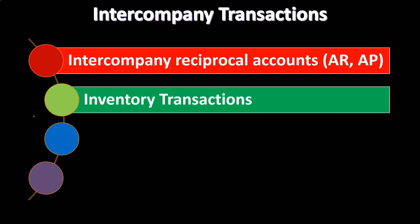Then we have inventory transactions. Now these are going to be a little bit more difficult. There's some overlap here — if there's an inventory transaction, it's quite possible that sales was affected, as well as accounts receivable and so on. That could be the case, but we could kind of separate those items out.